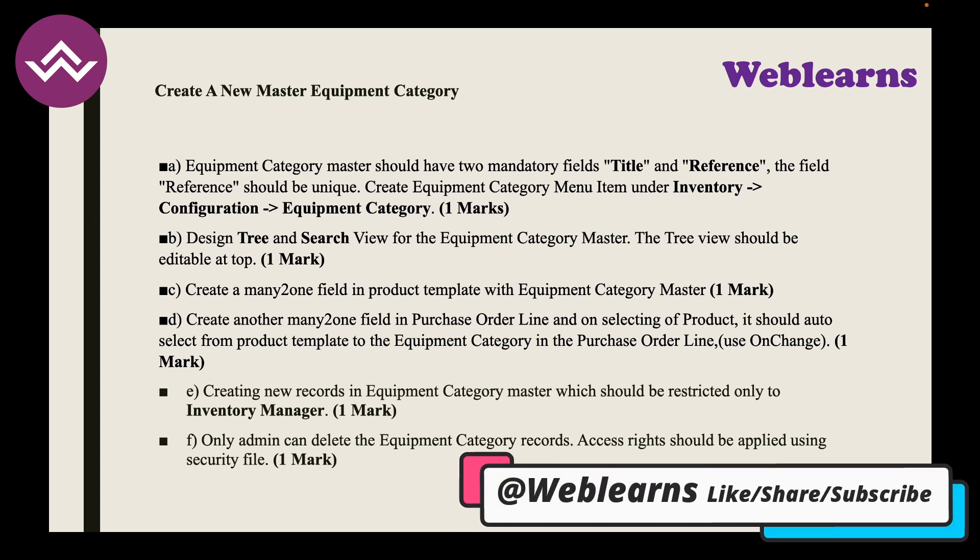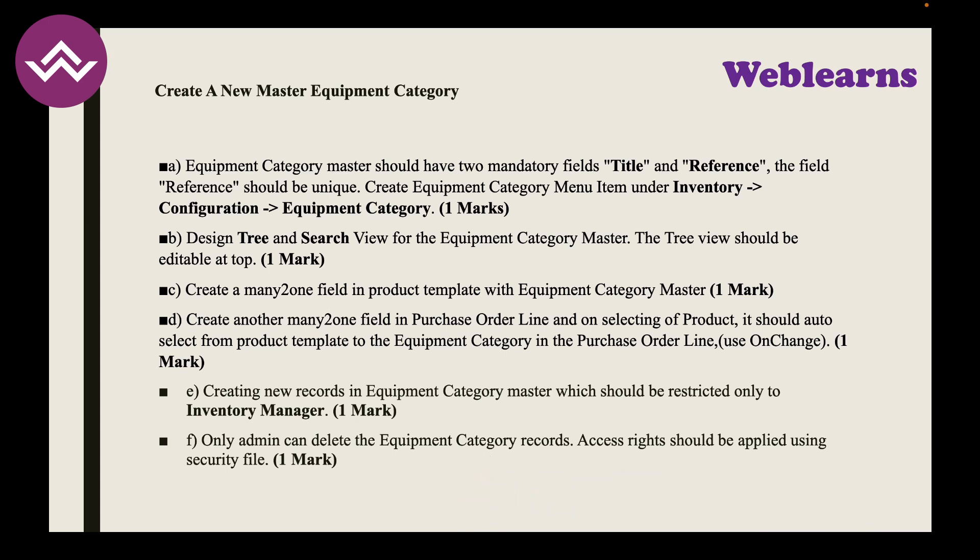Task B: Design a tree view and search view for the Equipment Category master. The tree view should be editable at the top — once done, that's one mark. Task C: Create a many-to-one field in the product template linking to Equipment Category master, and create another many-to-one field in the purchase order line. On selecting a product, it should auto-select the equipment category using the onchange method. Once done, one more mark.